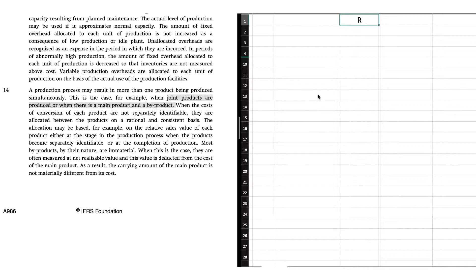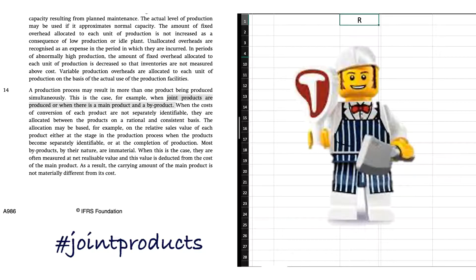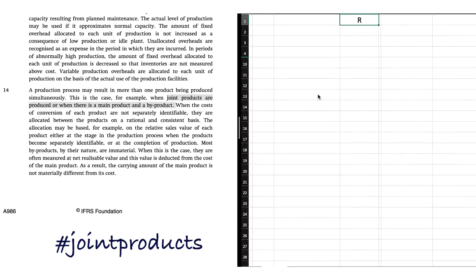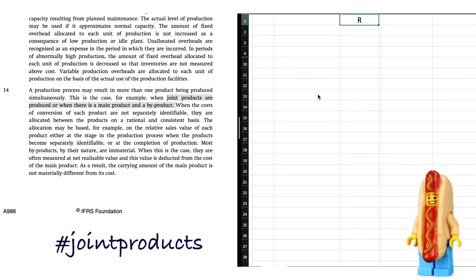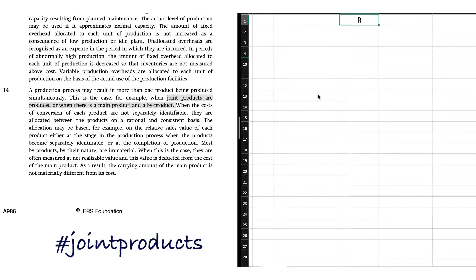It's only one paragraph dedicated to joint and byproducts, so let's keep it simple. What is a joint product? An example is probably the best way to explain it. Think of a butchery — the butchery has some mince, which we'll consider our raw material. It puts that mince into a machine and the machine produces hamburger patties and sausages. The raw material goes in and two main products come out the other side — those would be joint products.